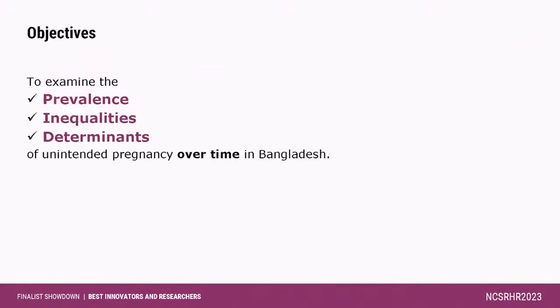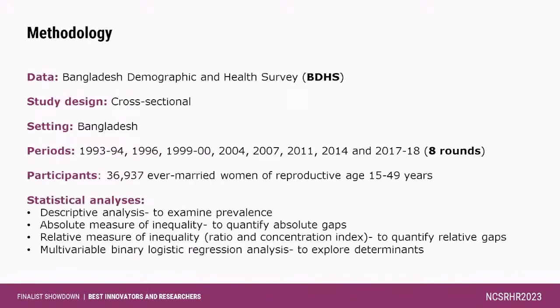This is our methodology section. We have used the Bangladesh Demographic and Health Survey data. This is cross-sectional data, and we have used 8 rounds of BDHS data. Our study participants were 36,937 ever-married women of reproductive age. We used descriptive analysis to examine the prevalence, absolute measure of inequality, relative measure of inequality, and multivariable binary logistic regression to identify the determinants.